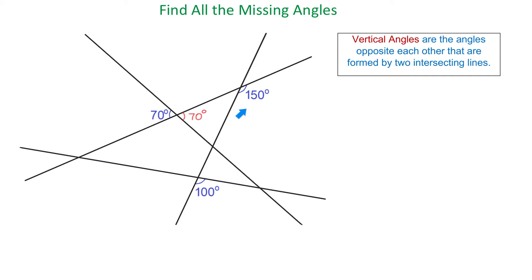Also, if this angle is 150 degrees, then this one is also 150 degrees because they are vertical angles. And if this angle is 100 degrees, then this one is also 100 degrees.